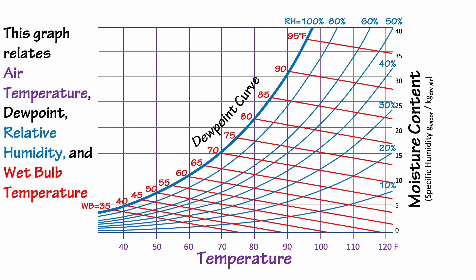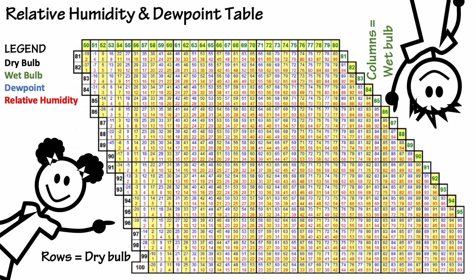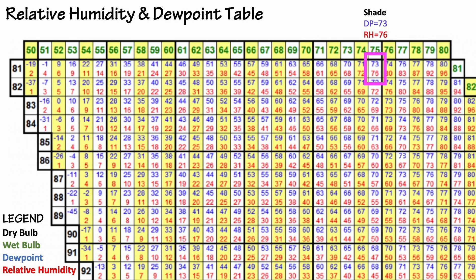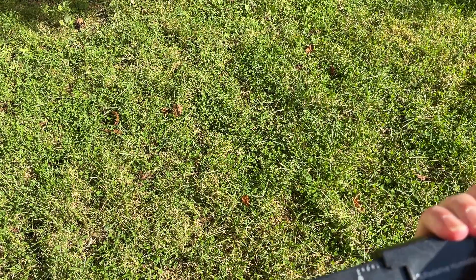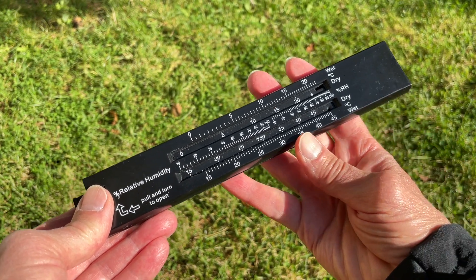Because there's so much going on in this graph, some people prefer to use a table of values for wet bulb and dry bulb. On the table, the dry bulb values are the rows and the wet bulb values are the columns. At our first site in the shade, dry bulb is 81 and wet bulb is 75, so relative humidity is 76% and dew point is 73°F. In the parking lot, dry bulb is 86 and wet bulb is 77, so relative humidity is 67% and dew point is 73°F. And on the grass, dry bulb is 84 and wet bulb is 76, giving relative humidity of 69% and dew point of 73°F. Some sling psychrometers even have a little humidity slide rule printed on the thermometer case.